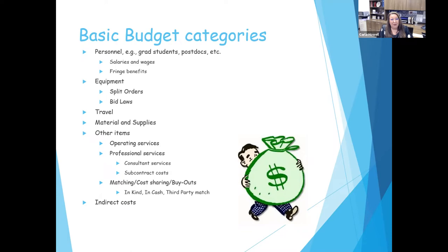Matching, cost sharing, and buyouts could be a whole session in itself. We have a large proposal right now with 15 partners that all have cost sharing in it. On our internal routing form, page two is the cost sharing and matching part. They have to identify it by category, identify the source of it, and the budget unit head for that source has to sign off attesting that they have that funding available, or they are allowing that percentage of time for this proposal, or they have funding in their budget to cover what's being projected in the matching.